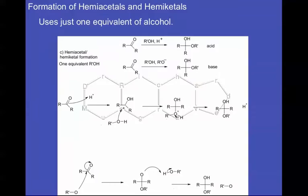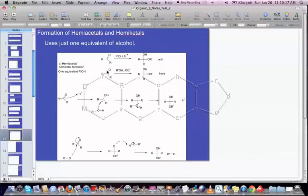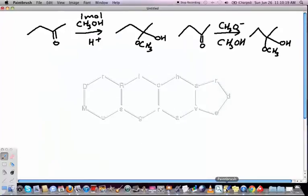What we're going to look at first is hemiacetal and hemiketal formation. So, we're just looking at the addition of one equivalent of alcohol. Let's look at the mechanisms that we can use to form those. Alright, so here is our hemiacetal and hemiketal formation. And in each case we're using one mole of alcohol.